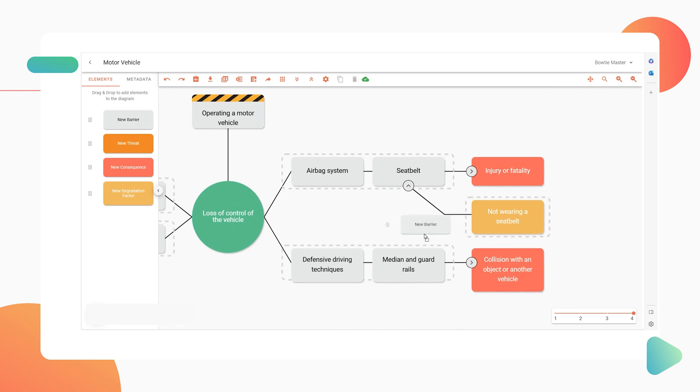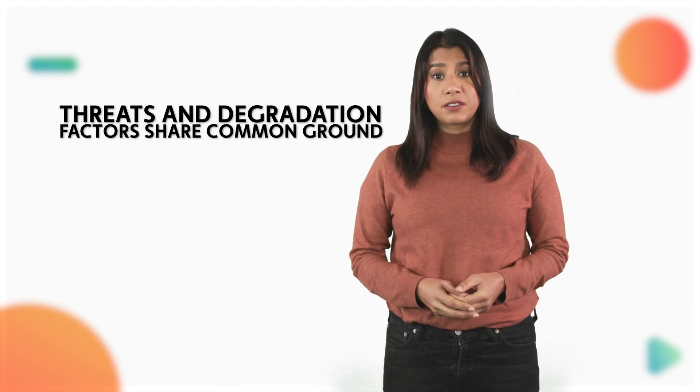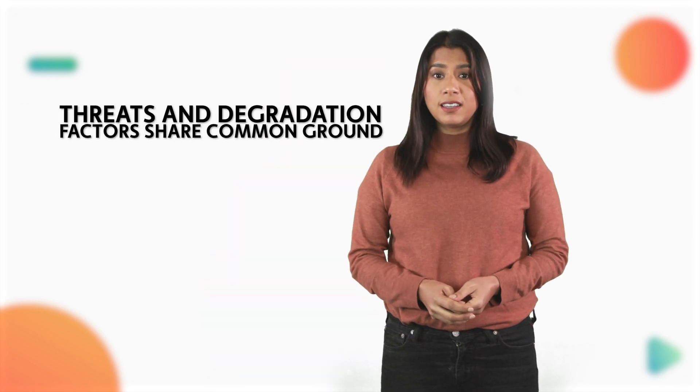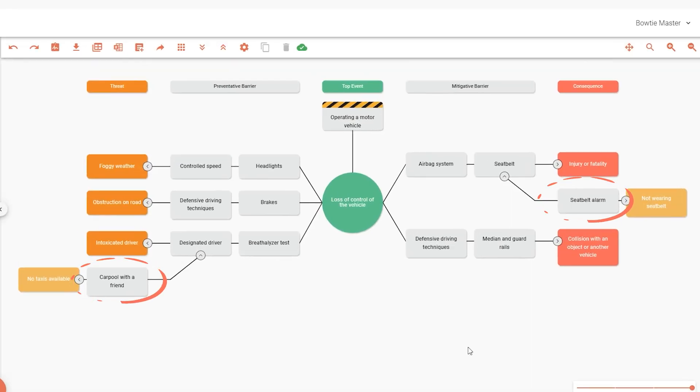Most incidents result from multiple barrier failures, weakened long before the actual event by degradation factors. Threats and degradation factors share common ground — both increase the likelihood of undesired consequences, but are equipped with their own barriers or controls to stop them. That said, there are three main differences.